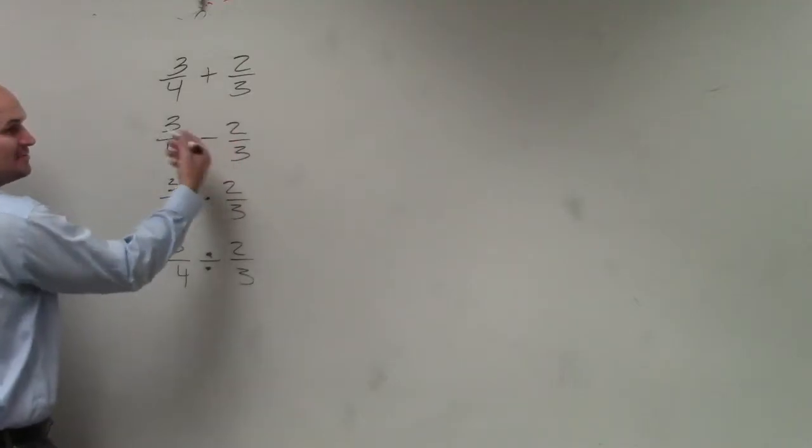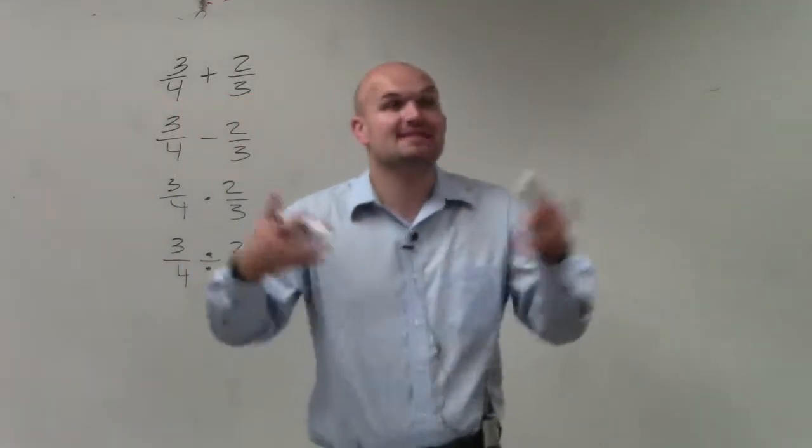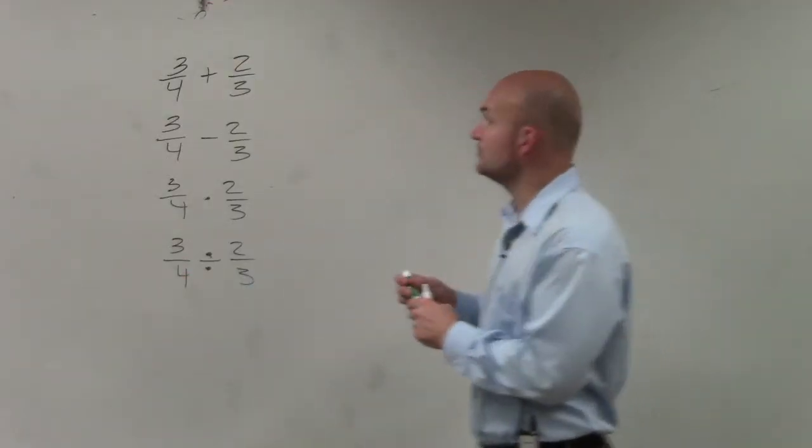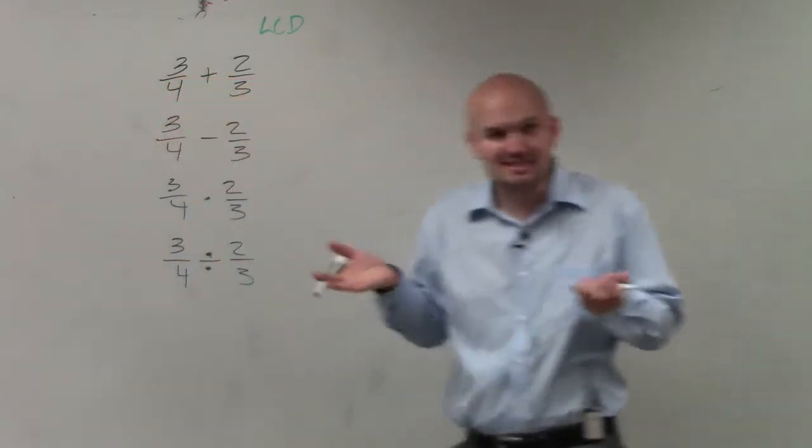For any time we're adding and subtracting, we have to find common denominators. If the denominators are not the same, we cannot combine the fractions. So the best thing I like to do is look at my two denominators and determine what my LCD is, my least common denominator.